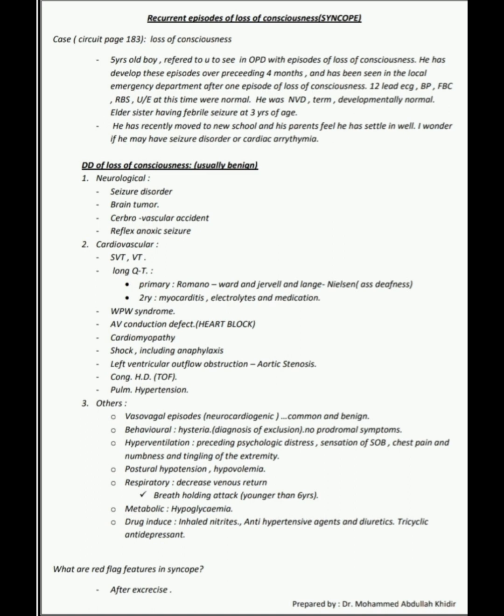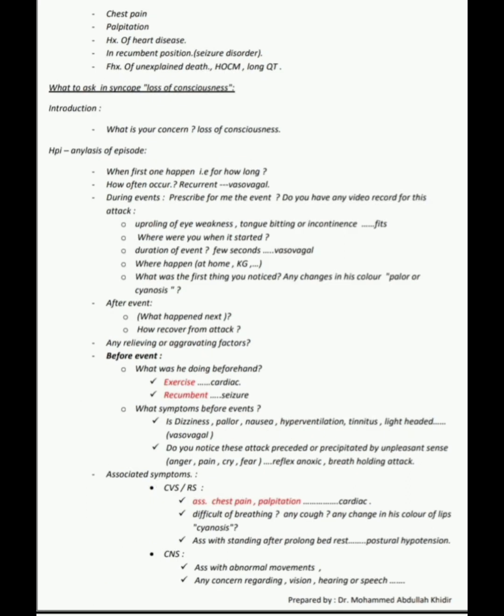Red flag features in syncope that must be identified in history include: syncope occurring after exercise, pain, palpitations, history of heart disease, syncope in the recumbent position, seizure disorder, and family history of unexplained death, hypertrophic obstructive cardiomyopathy, or long QT syndrome. These red flags need to be excluded.